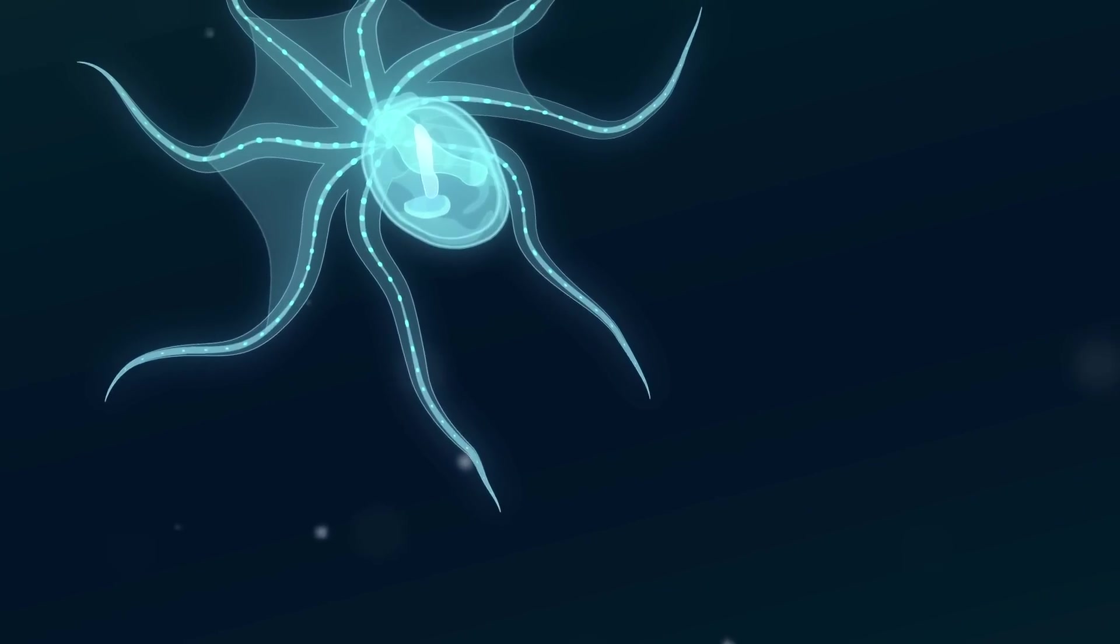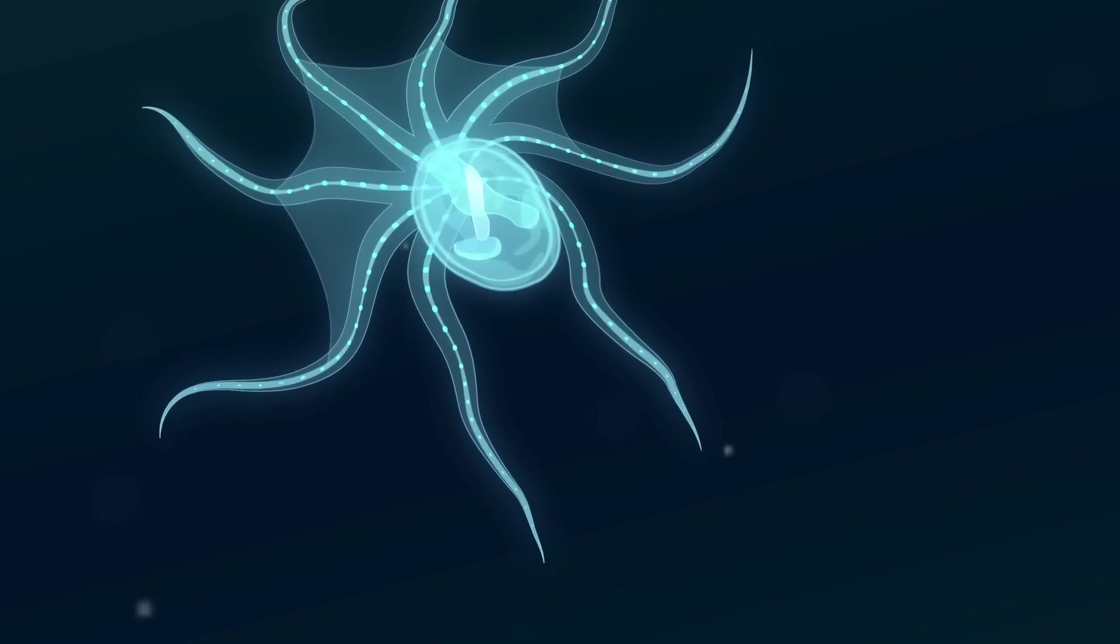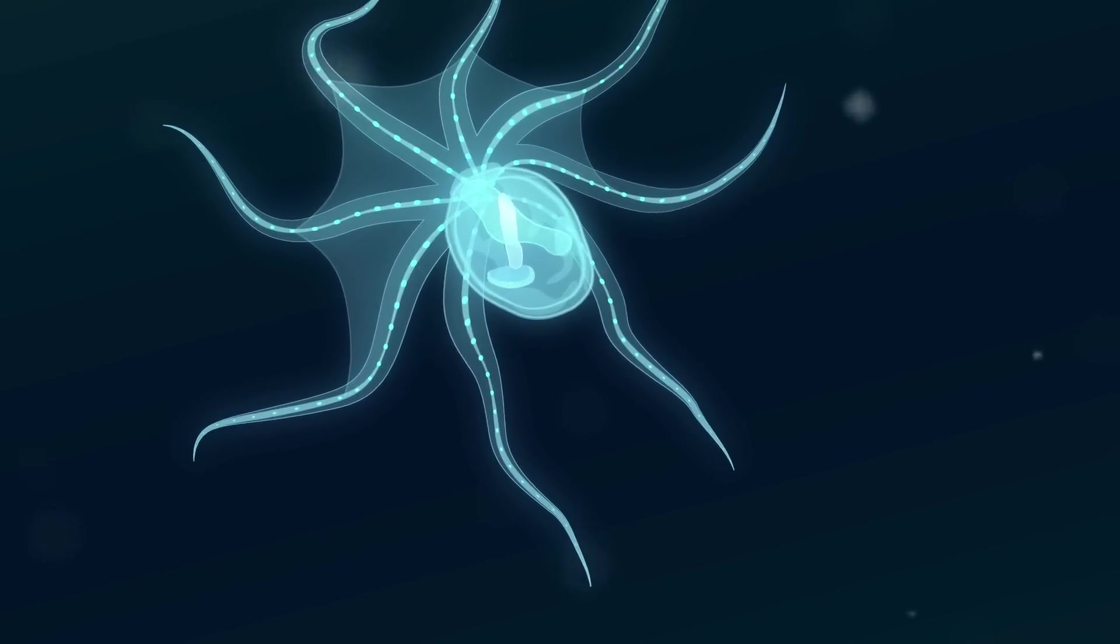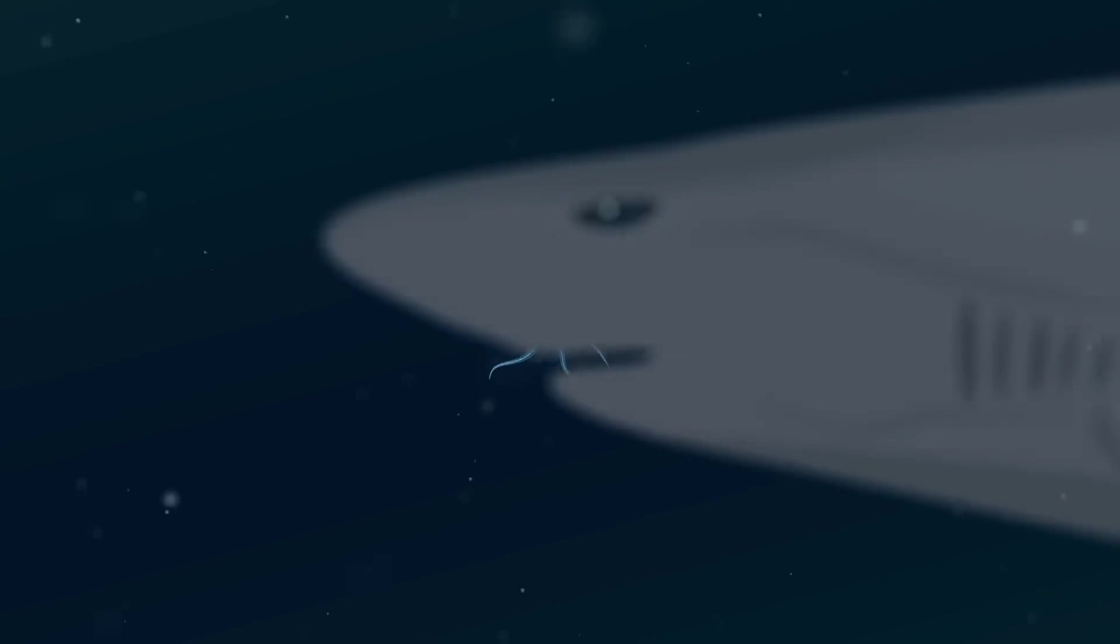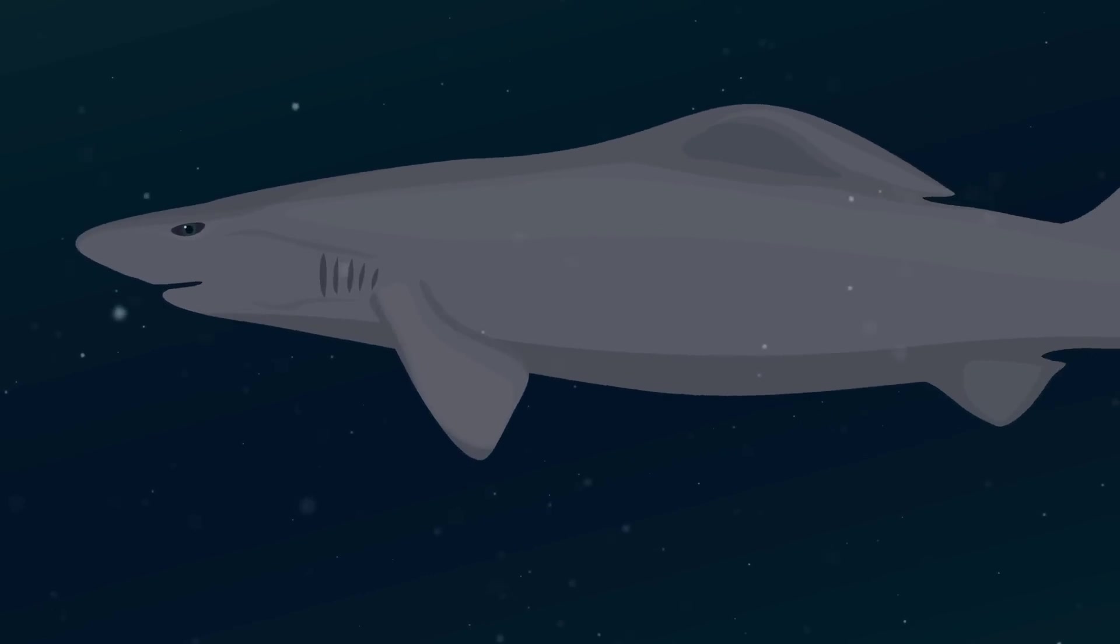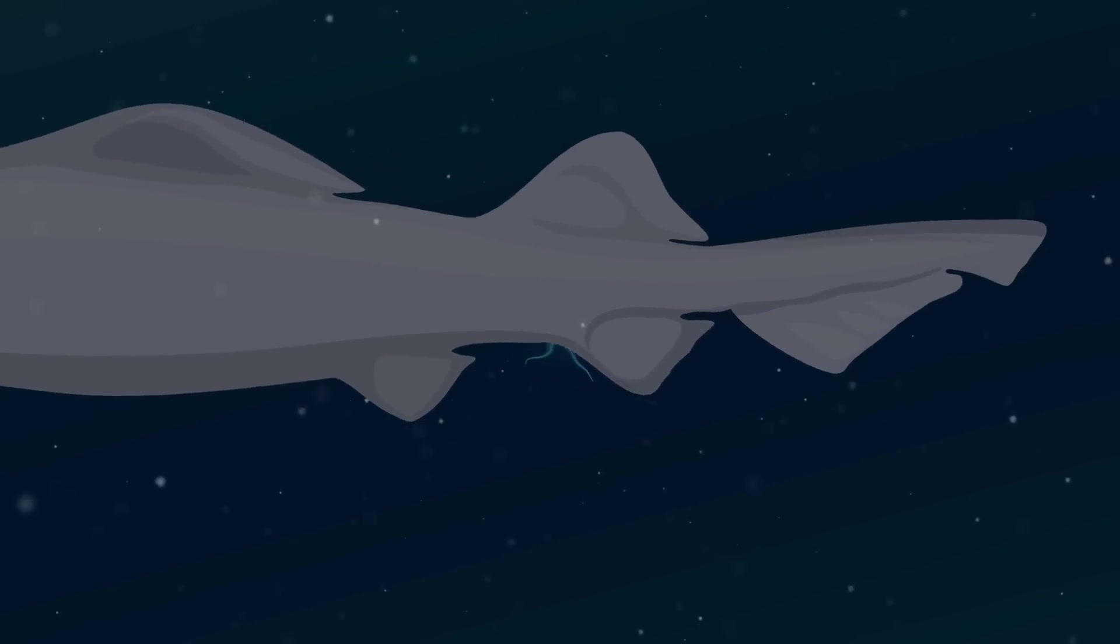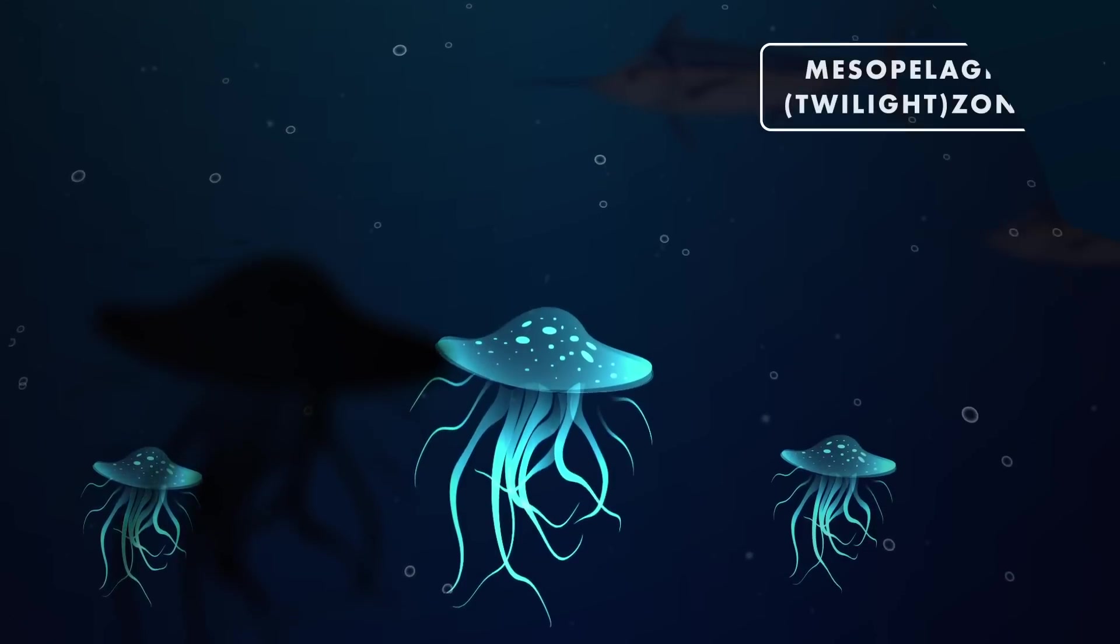Animals like the glass octopus have nearly transparent bodies and see-through skin, only their eyes and organs are faintly visible. With this clever disguise, the glass octopus and other transparent creatures can safely float through open waters without attracting dangerous predators.